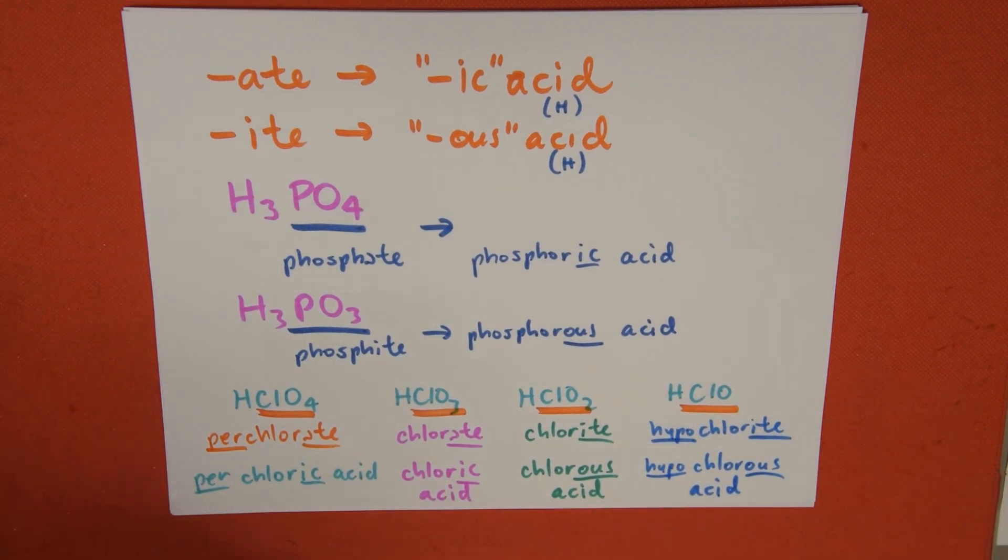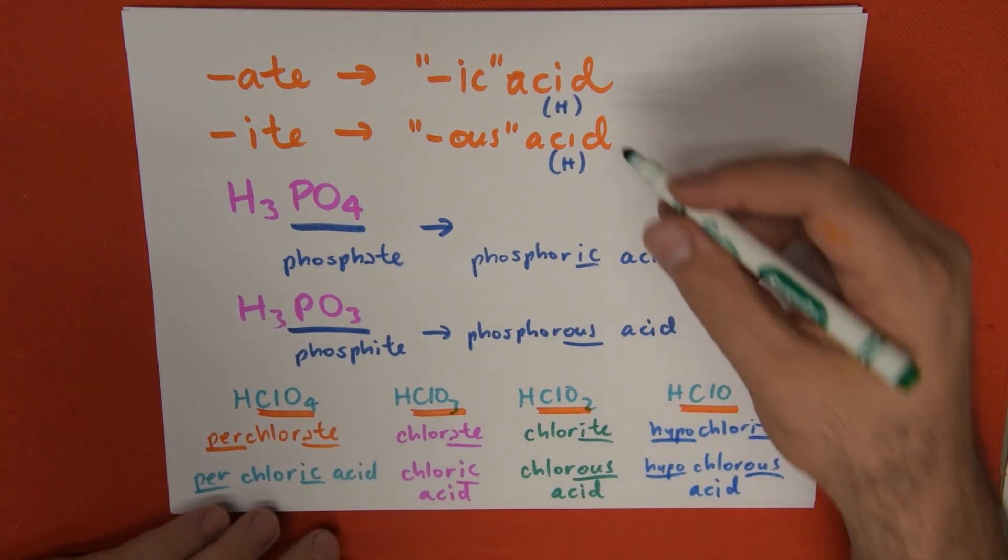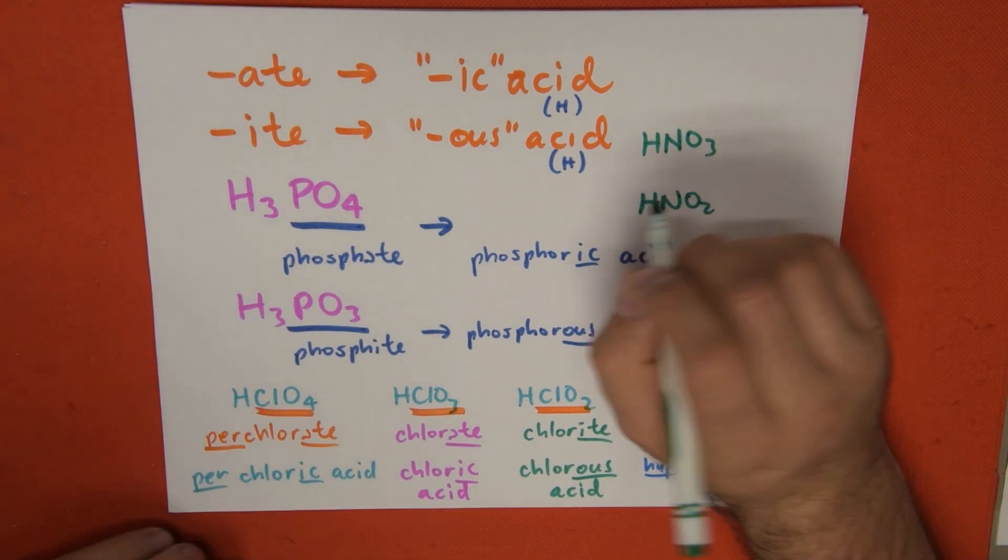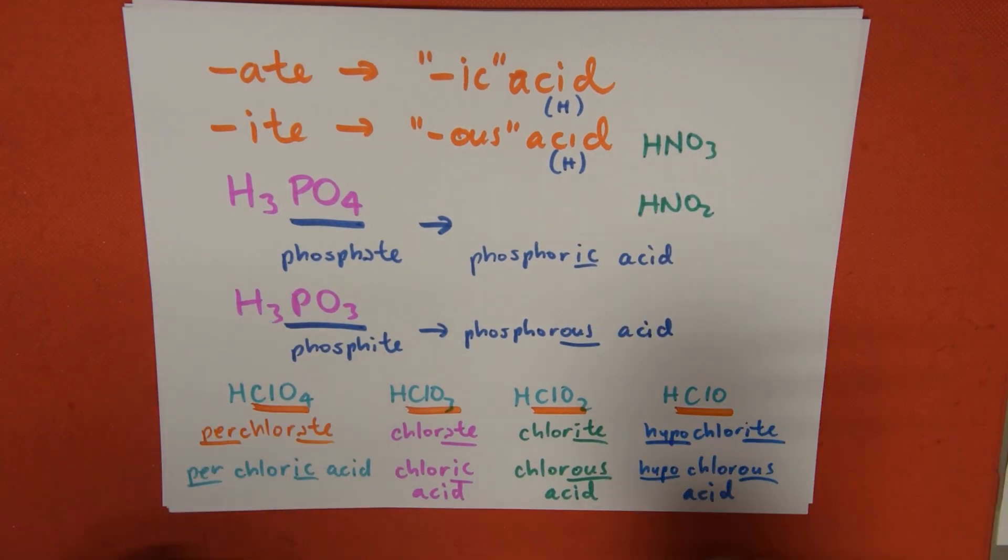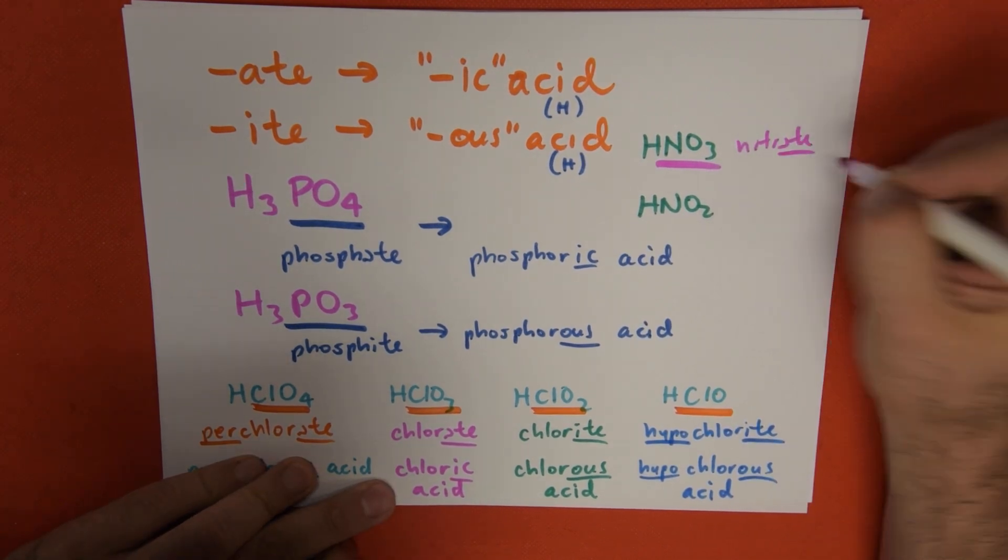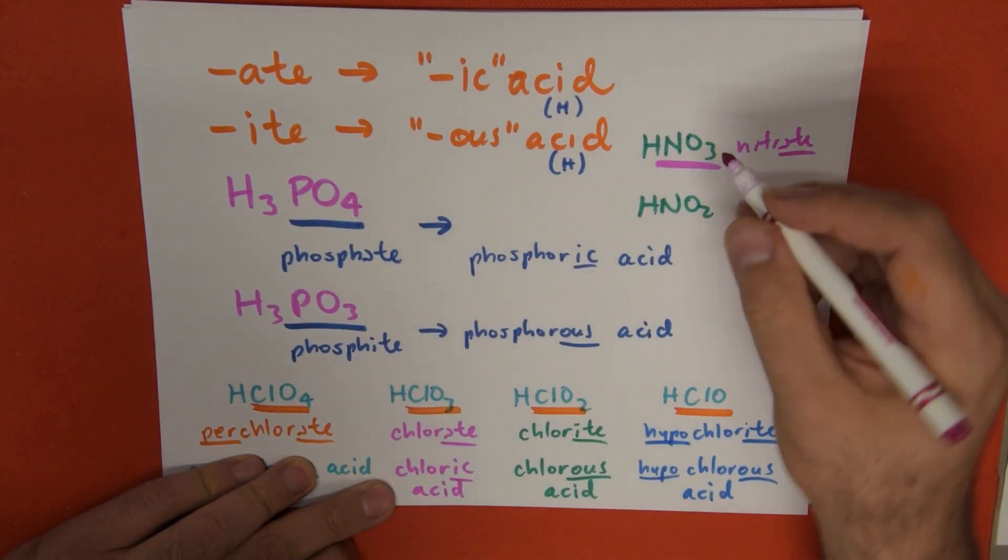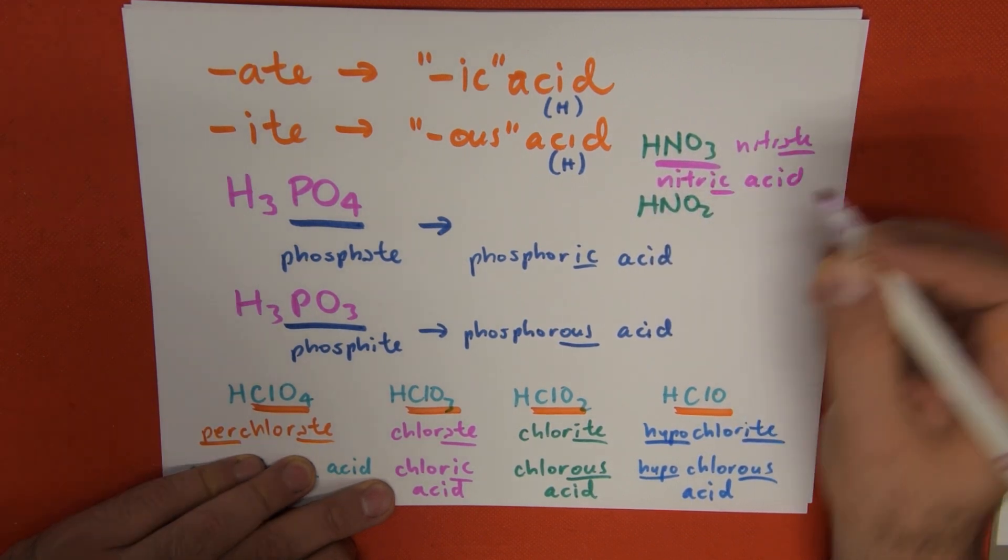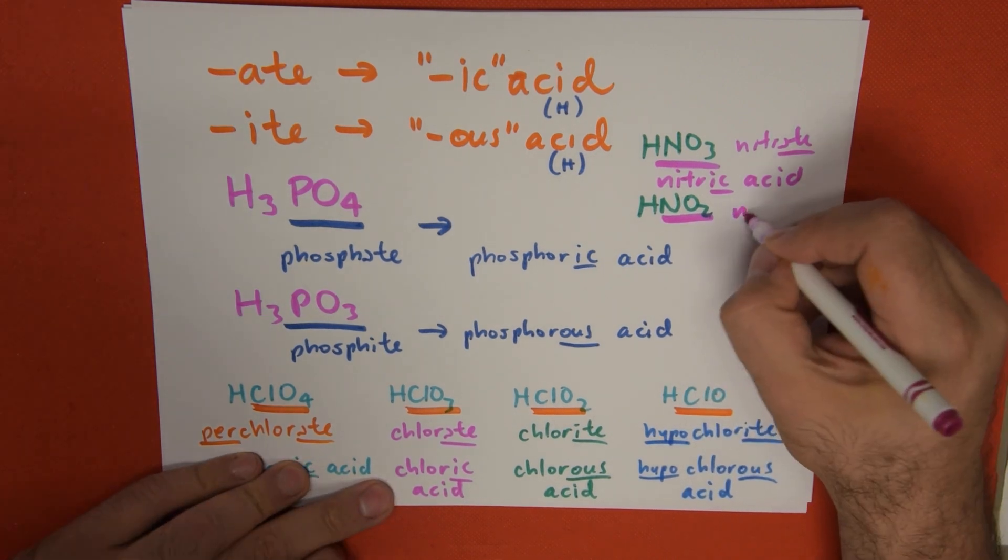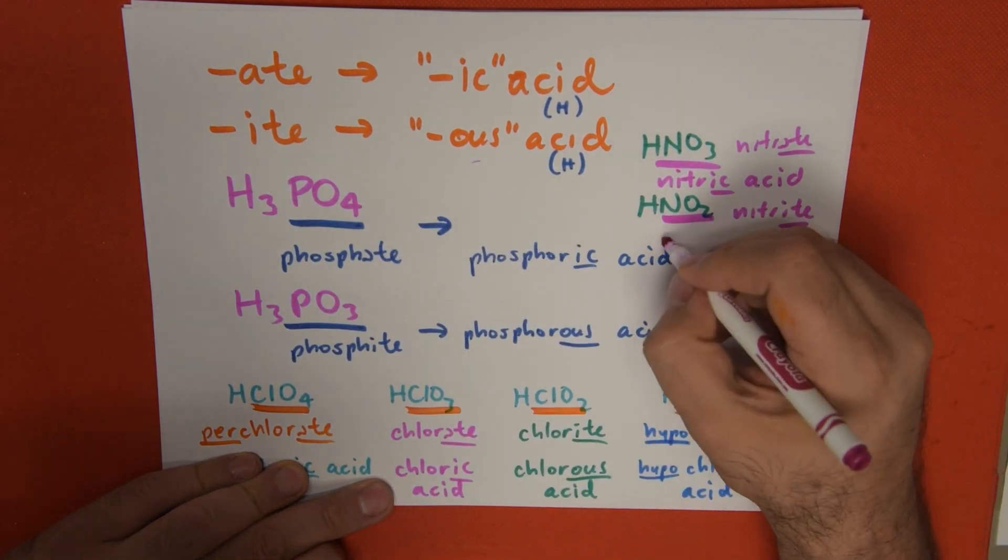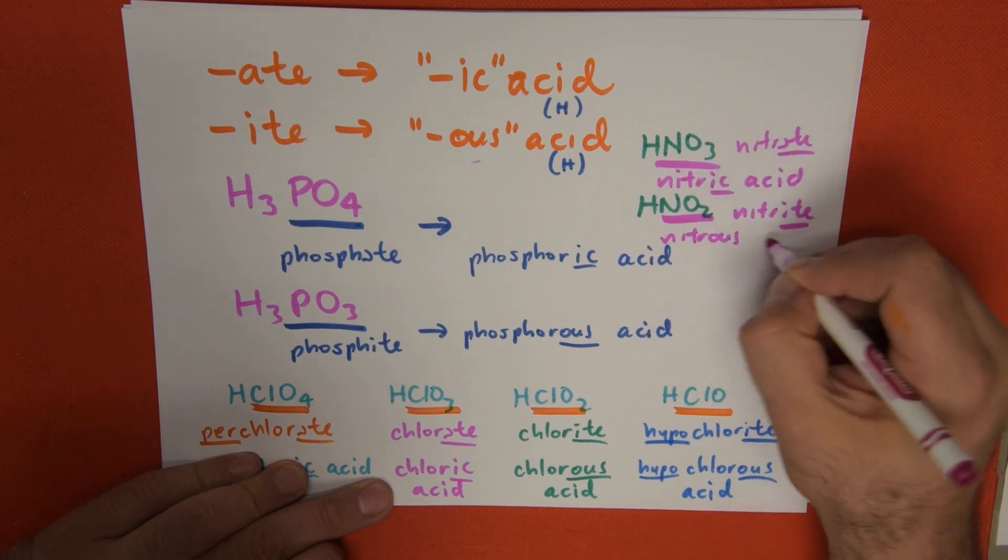Let's do one final refresher example. For example, HNO3 and HNO2. The name of this anion is nitrate. This anion is going to turn into -ic, so this is nitric acid. And this one is called nitrite. The -ite ending turns into -ous, so nitrous acid.